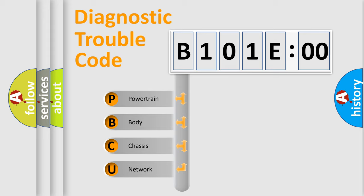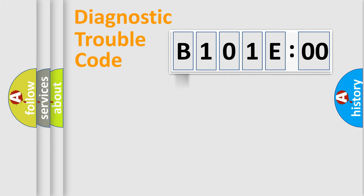We divide the electric system of an automobile into four basic units: powertrain, body, chassis, and network. This distribution is defined in the first character code.